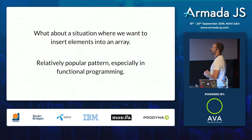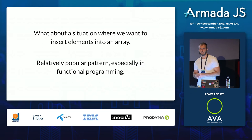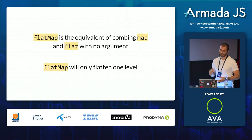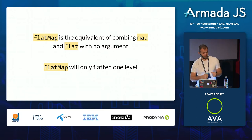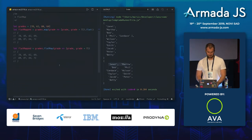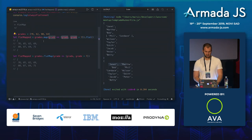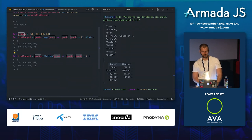If we need to add a new element to an array and also flatten it, we could combine map and flat with no arguments, but JavaScript and the ECMAScript community decided to add flatMap, which is a combination of flat and map. So instead of chaining two methods - first mapping to add or transform elements and then flattening - we can do it all in a single flatMap call. That reduces two method calls to one.